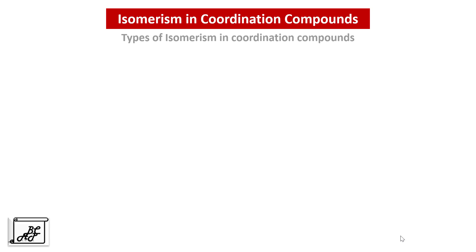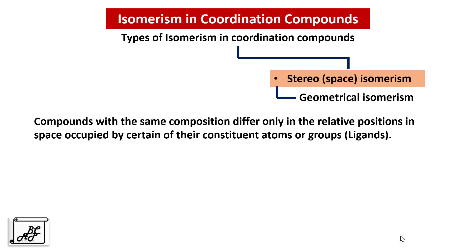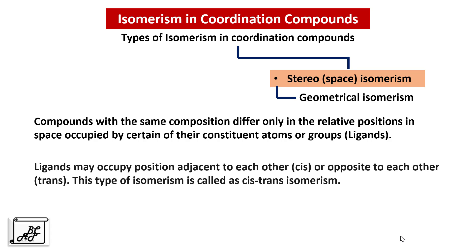The second type of isomerism in coordination compounds is Stereo or Space Isomerism. The first type of stereoisomer is geometrical isomerism. Compounds with the same composition differ only in the relative positions in space occupied by certain constituent atoms or groups called ligands. These ligands may occupy positions adjacent to each other, called cis, or opposite to each other, called trans. This type of isomerism is called cis-trans isomerism.